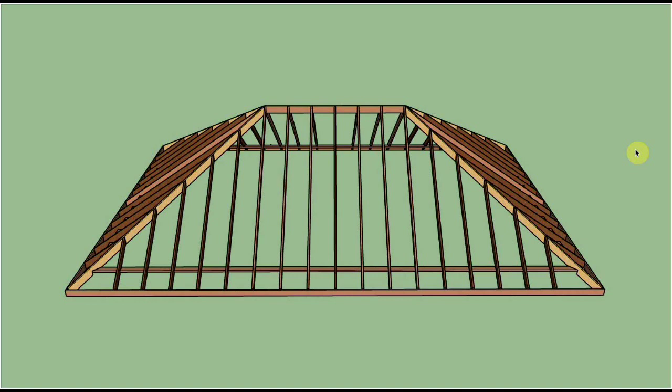Here we have an equal slope hip roof. All four sides are the same slope. That makes it equal slope, and in this case the slope of the roof is 8/12.